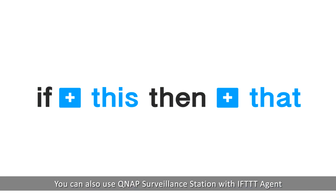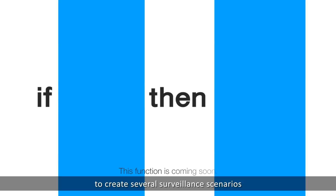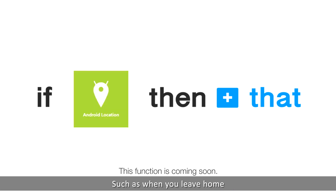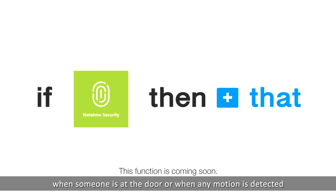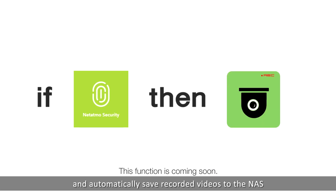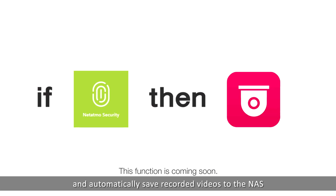You can also use QNAP Surveillance Station with IFTTT agent to create several surveillance scenarios, such as when you leave home, when someone is at the door, or when any motion is detected — then start Surveillance Station to monitor and automatically save recorded videos to the NAS.